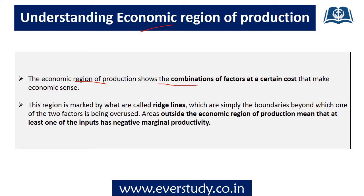The economic region is a boundary that is limited, and we know the boundaries are defined by ridge lines. The level of production is at the point of tangency. If production activity is within the ridge lines, there will be a location of the Economic Region of Production. If any input is used more than necessary, marginal product falls.